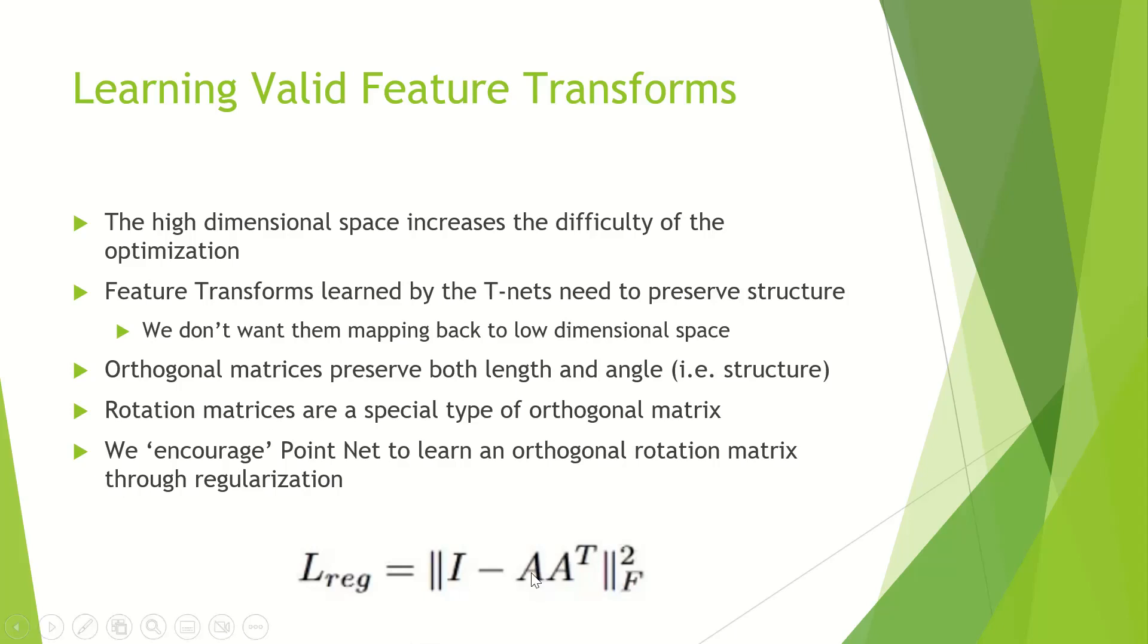An orthogonal matrix A, if we multiply it times itself when we do the transpose, is equal to the identity matrix. If this A matrix is orthogonal, this regularization term should be zero. If we can get this A by A identity minus A times A to be close to zero, our rotation matrix will be close to orthogonal, and it will have the properties of preserving both length and angle, or structure, that we want out of this.